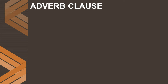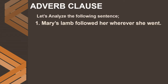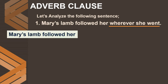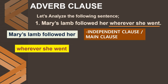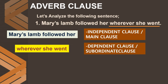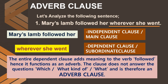Now let's go on to learn about adverb clauses. Take a look at the sentence: 'Mary's lamb followed her wherever she went.' The main clause is 'Mary's lamb followed her.' For 'wherever she went,' it does not answer 'what kind of' — so it is not an adjective clause — and it does not answer 'what' — so it is not a noun clause. Therefore, it is an adverb clause. The entire dependent clause adds meaning to the verb 'followed,' functioning as an adverb.